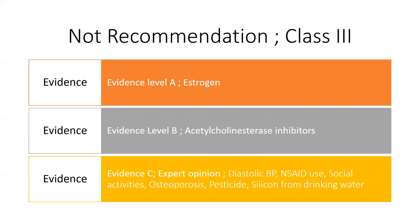There are some class 3 recommendations — strategies or risk factors which are not recommended. In this regard we have evidence level A, B, and C. Evidence level A includes estrogen. Evidence level B includes cholinesterase inhibitors, which do not prevent Alzheimer's disease but decrease its symptoms. Evidence level C includes diastolic blood pressure, NSAID use, social activities, osteoporosis, pesticide exposure, and silicone from drinking water. These are class 3 risk factors that are not recommended.